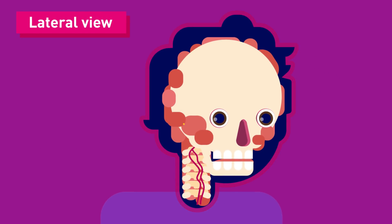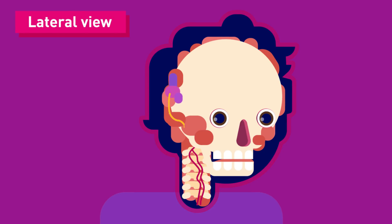Extracranial: after exiting the skull, the first extracranial branch to arise is the posterior auricular nerve, which provides motor innervation to some of the muscles around the ear. Immediately distal to this, motor branches are sent to the posterior belly of the digastric muscle and to the stylohyoid muscle. The main trunk of the nerve, now termed the motor root of the facial nerve, continues anteriorly and inferiorly into the parotid gland.